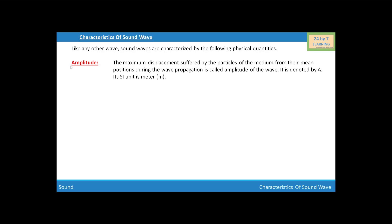First, we are going to discuss amplitude. Amplitude is how high the crests are. The maximum displacement suffered by the particles of the medium from their mean positions during the wave propagation is called amplitude of the wave. It is denoted by A and its SI unit is meter. If you see this figure, there is a wave which propagates along the x-axis. This maximum displacement about their mean position is called its amplitude.